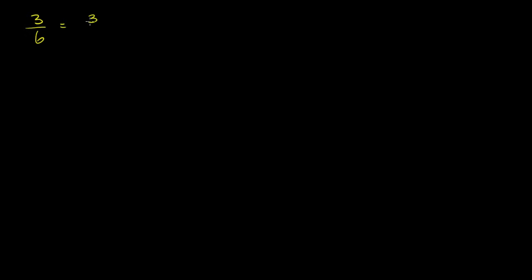When we first started learning about fractions or rational numbers, we learned about the idea of putting things in lowest terms. So if we saw something like 3/6, we knew that 3 and 6 share a common factor — 3 is just 3, but 6 could be written as 2 times 3. Since they share a common factor of 3, we could divide the numerator and denominator by 3, and they would cancel out. In lowest terms, this fraction would be 1/2.